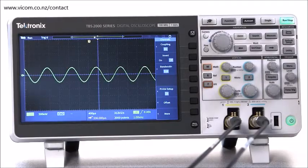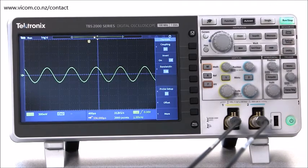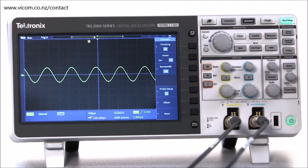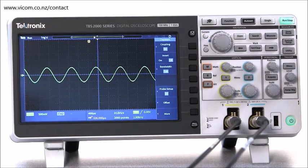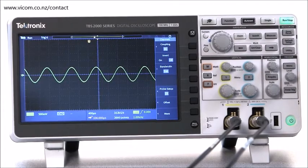I've covered the probe and the vertical settings. That leaves the horizontal settings. The horizontal controls determine the x or time axis on the display. The most important controls are the horizontal scale and horizontal position.